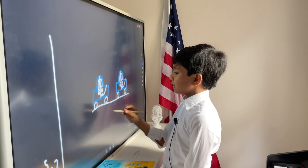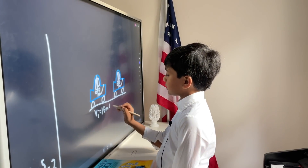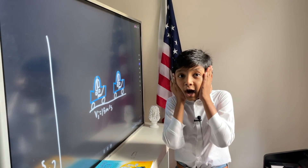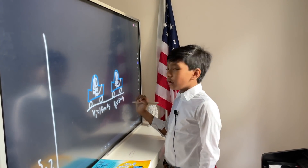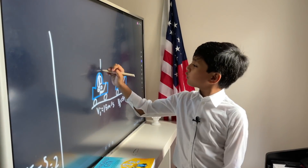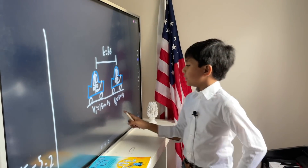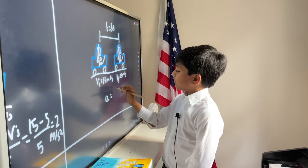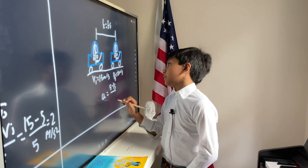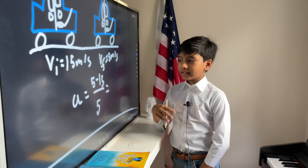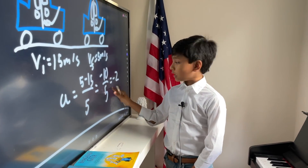Over here, let's say velocity initial is equal to 15 meters per second. But it goes down to 5! And of course t will be constant, so 5 seconds. Now we see acceleration is 5 minus 15, which means that it must be negative. So we get 5 minus 15, which is minus 10 over 5, that gives us minus 2 meters per second squared.